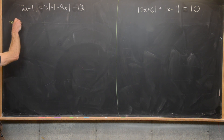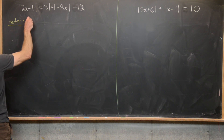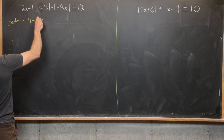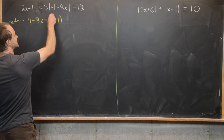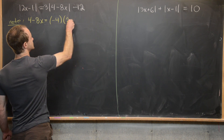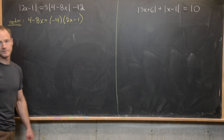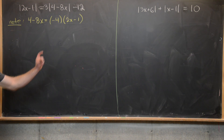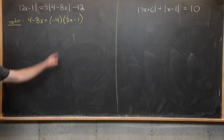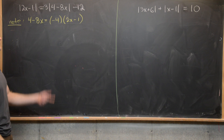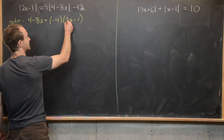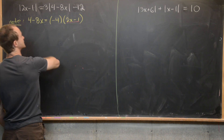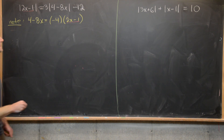If we take 4 minus 8x and factor out a minus 4, we're going to be left with 2x minus 1. Taking the minus sign out switches the order of subtraction, and taking the 4 out divides each of those numbers by 4. This is good news because this 2x minus 1 looks like the other 2x minus 1.